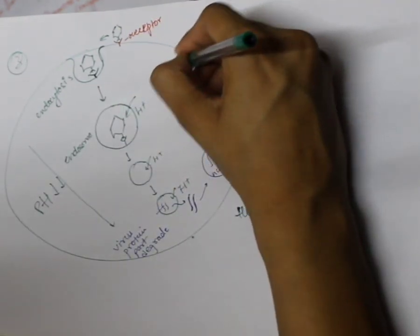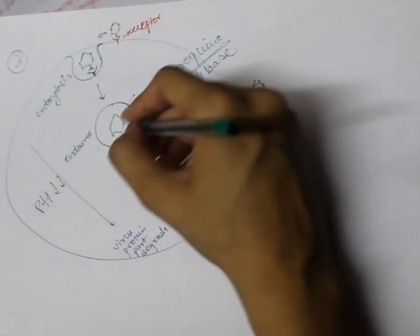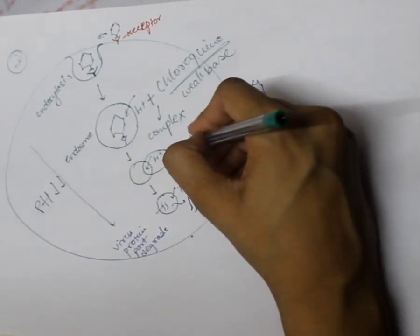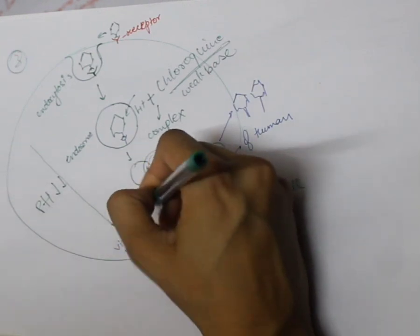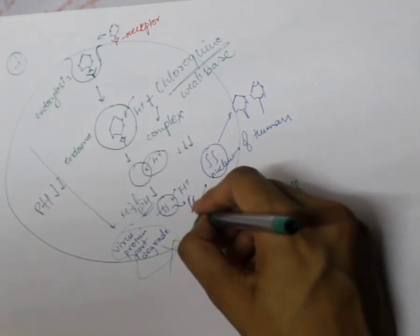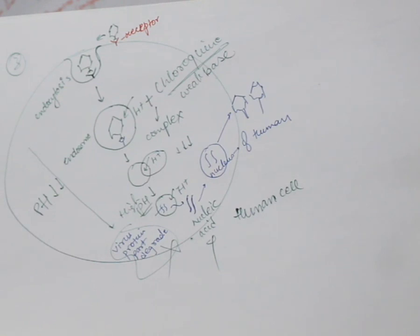But when we give chloroquine, since it is a weak base, it will bind with the H+ ions entering the endosome and form a chloroquine–H+ complex. This prevents the pH from decreasing — the pH remains high. If the pH remains high, the protein part of the virus will not degrade. If the protein does not degrade, the nucleic acid is not exposed. If it is not exposed, the virus will not make copies and will not affect humans. These are the steps through which chloroquine can prevent both viral infection and malaria.